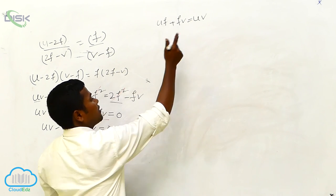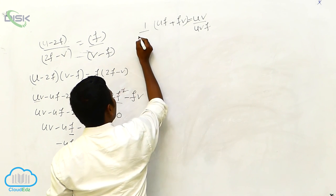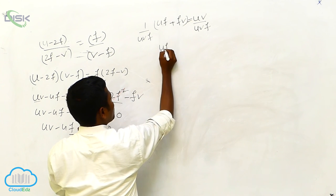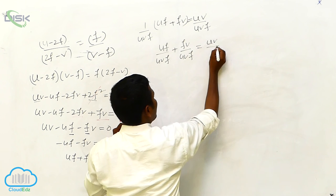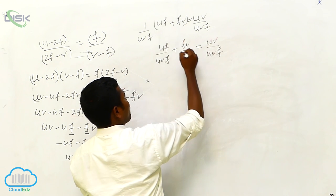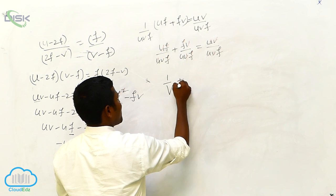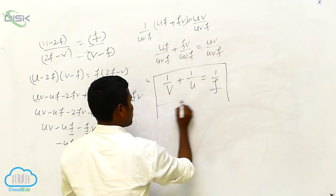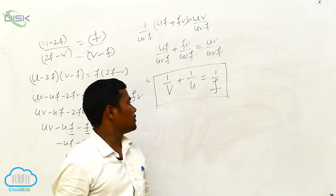Now what I am doing? Simply I am dividing the above equation by UVF on both sides. UF by UVF plus FV by UVF equals UV by UVF. Same terms get cancelled — UU cancel, VV cancel, FF cancel — so what is remaining is 1/V plus 1/U equals 1/F. This is your mirror formula.